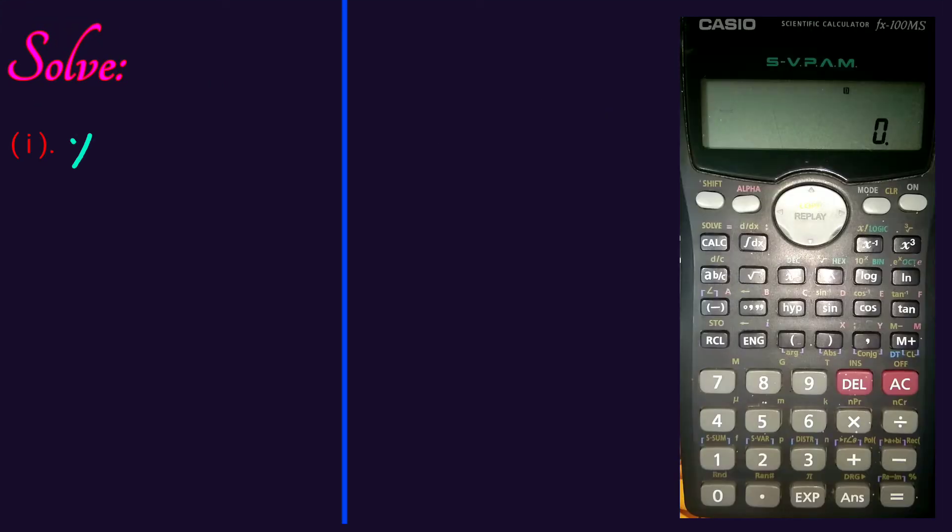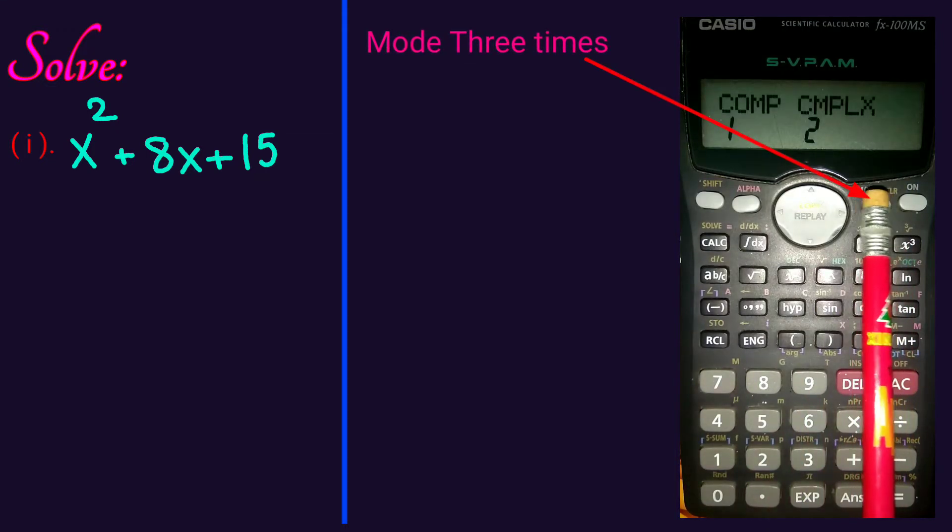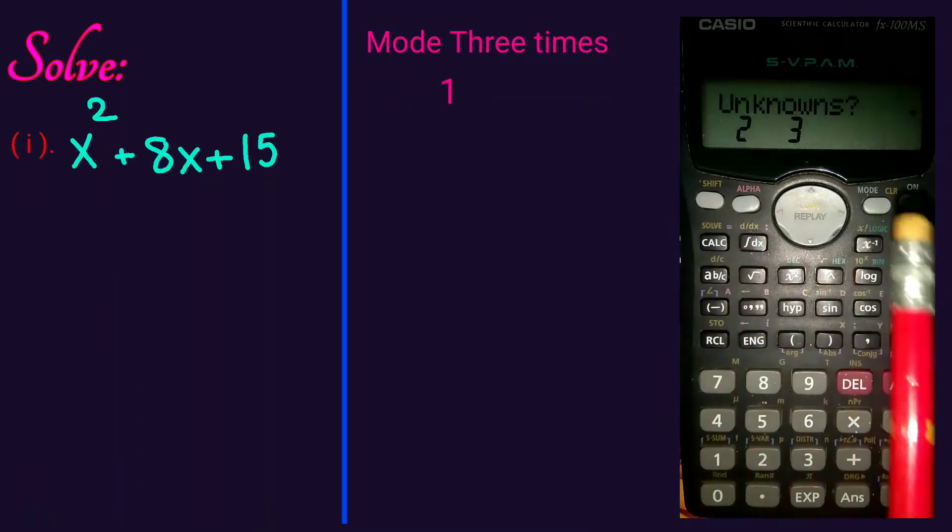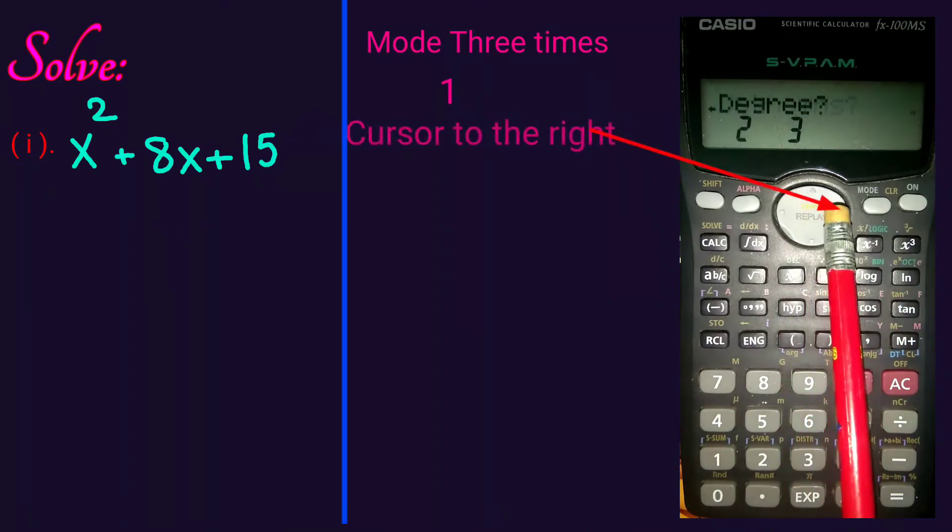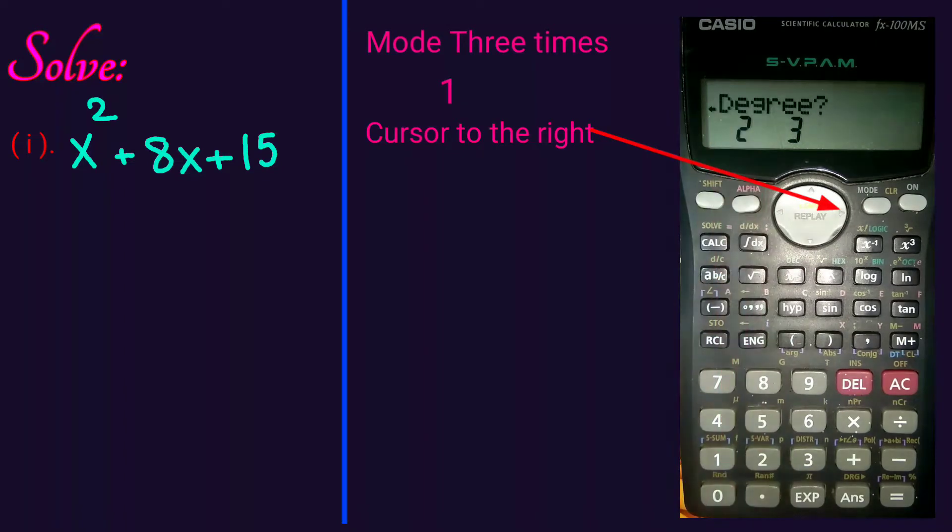Our first example is x square plus 8x plus 15. To solve this equation, press mode three times until you see the equation. Press 1 for equation. Select cursor to the right. Our example is about quadratic equation or we can say this as second order equation.